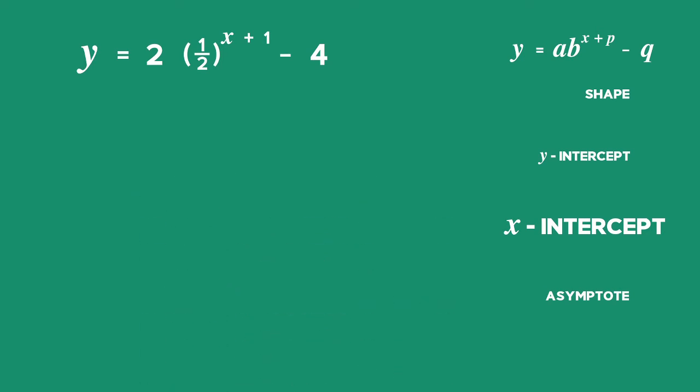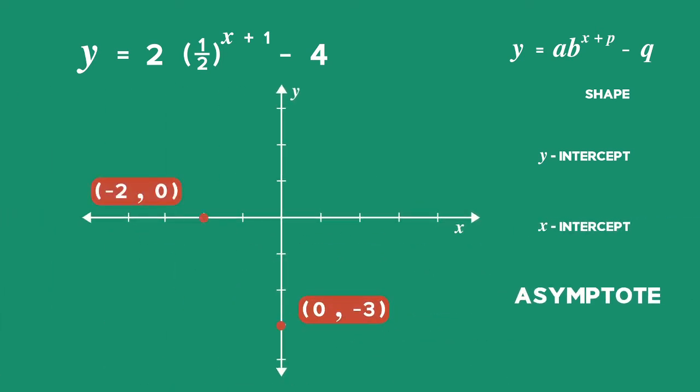We now have two points on the graph. From the given equation, we can read off the equation of the horizontal asymptote as y equals negative 4. We can draw in the asymptote as a dotted horizontal line.